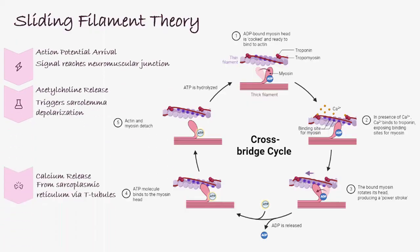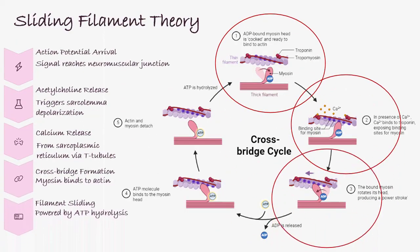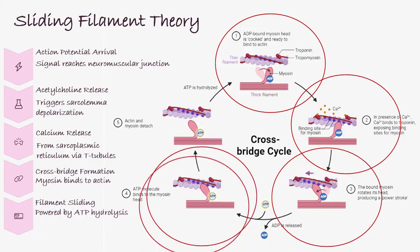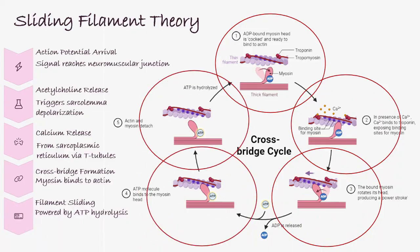Here's how it all plays out. The nervous system sends an action potential to the muscle, releasing acetylcholine. This stimulates calcium release from the sarcoplasmic reticulum. Calcium binds troponin, exposing binding sites on actin. Myosin heads latch on, perform a power stroke using ATP, and the filaments slide. Z lines come closer, the sarcomere shortens — that's how muscles contract.